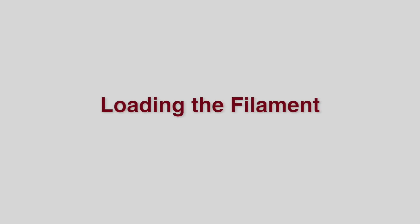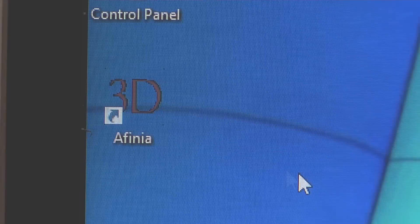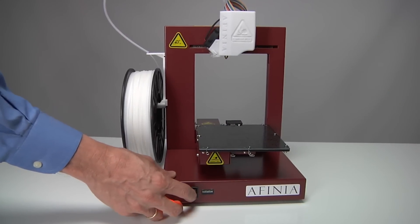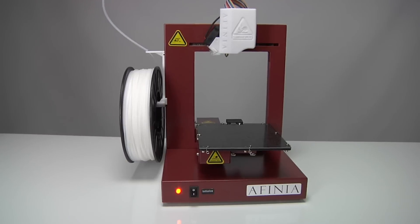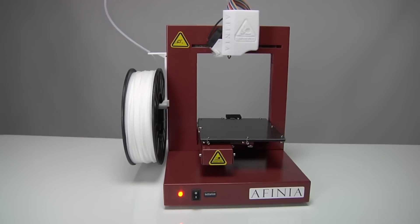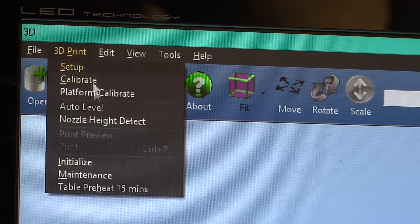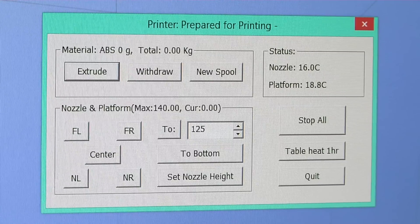Loading the filament. Start the Affinia 3D software and push the initialize button on the front of the 3D printer. When the printer is on, the light will turn green. After the printer has initialized, select maintenance from the 3D print menu. Click the extrude button.